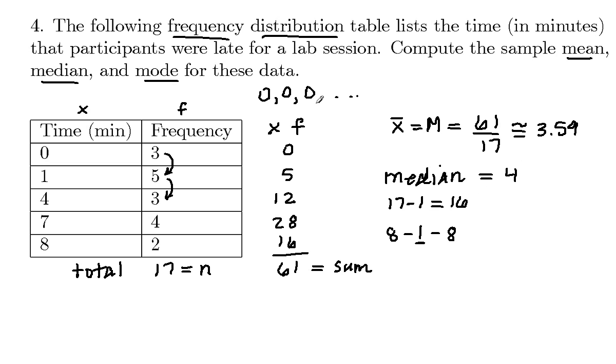Another way to think about that is if you keep listing out these values. Here we had zero, zero, zero, then five ones, and we had three fours, and then we have four sevens, and then we had two eights. So that's our complete set of data. So there's 17 values there, and the middle value is going to be the ninth value.